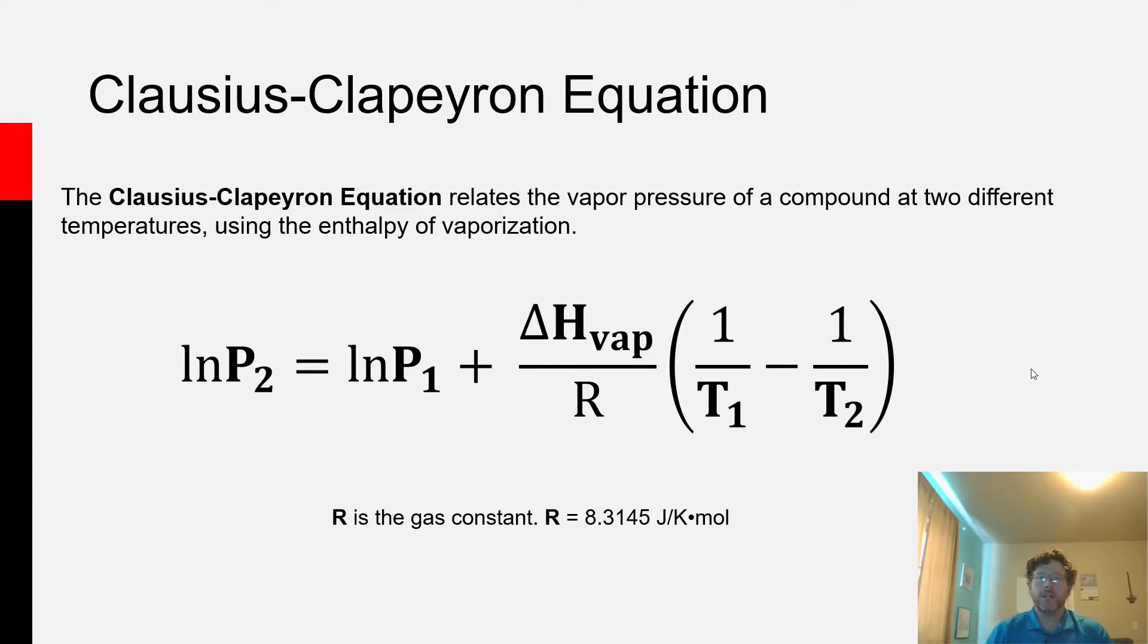What we do with the Clausius-Clapeyron equation is generally quite simple: we either find the vapor pressure of a liquid at a specific temperature, so we solve the equation for P_2, or we want to use vapor pressure and temperature data in an experiment to determine the enthalpy of vaporization for a liquid.